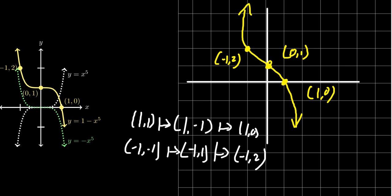This is how we can draw this thing even by hand. If we keep track of what happens to those three guideposts — zero zero, one one, and negative one one — we can graph this odd monomial by transformations.